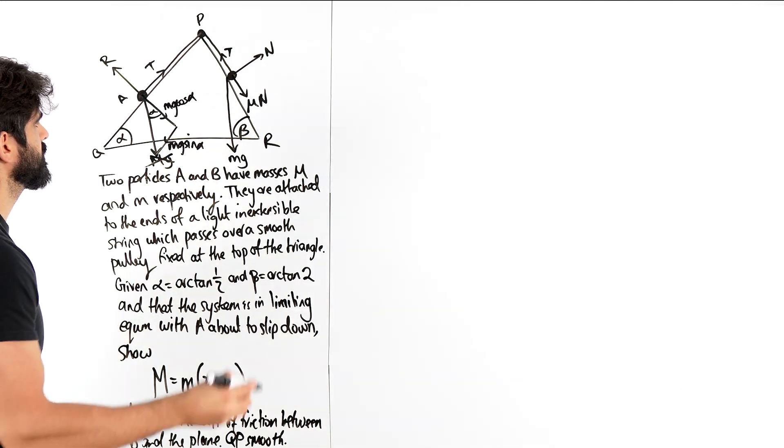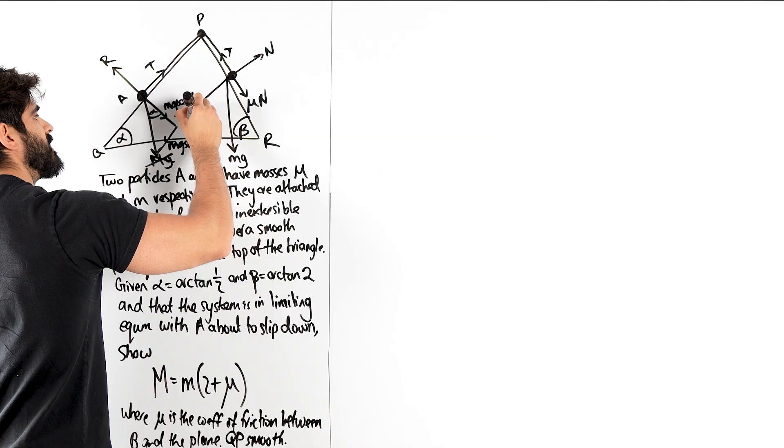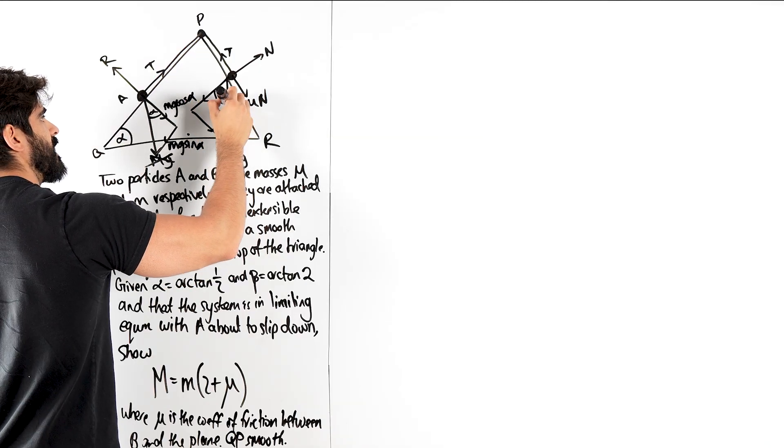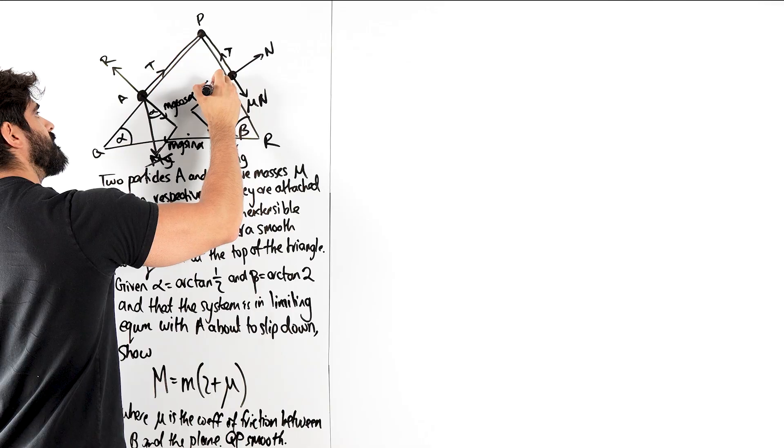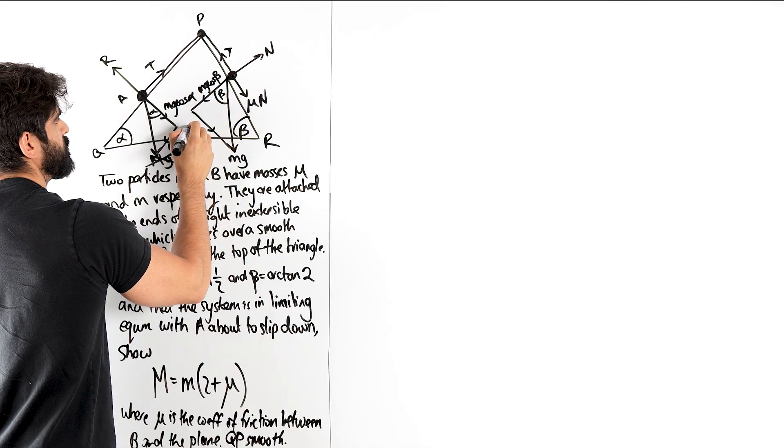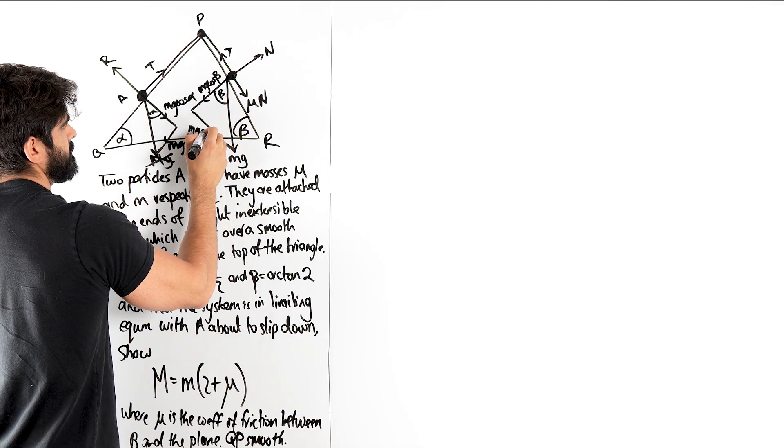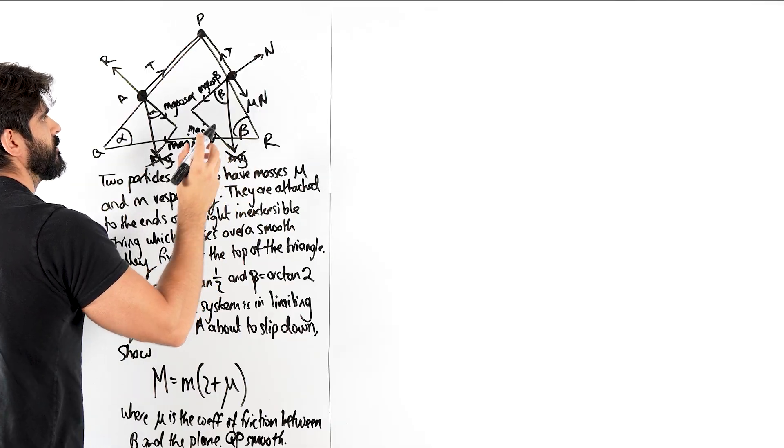Now with this lowercase we have into the ground, down the hill, this angle will be beta. So this will be MG cos beta and MG sin beta. Now that's dealt with.